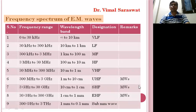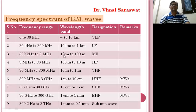So these three waves are known as microwaves. If a wave has a frequency from 300 GHz to 3 THz and a wavelength from 1 mm to 0.1 mm, then such a wave is known as a sub-millimeter wave. So this is the whole frequency spectrum of electromagnetic waves, and these three specific electromagnetic waves are known as microwaves.